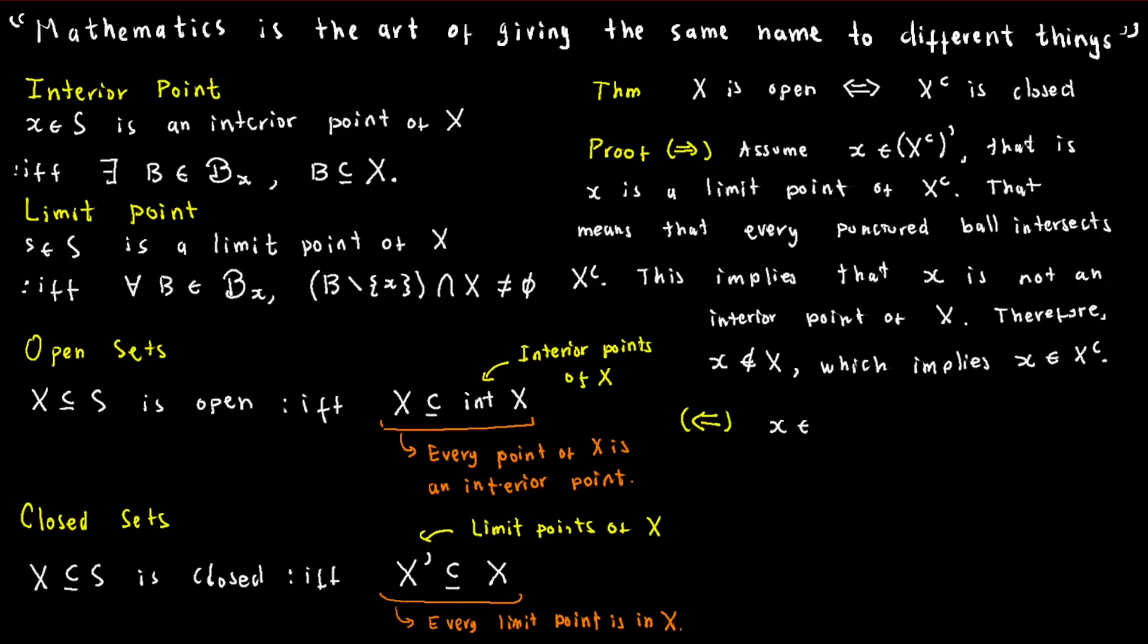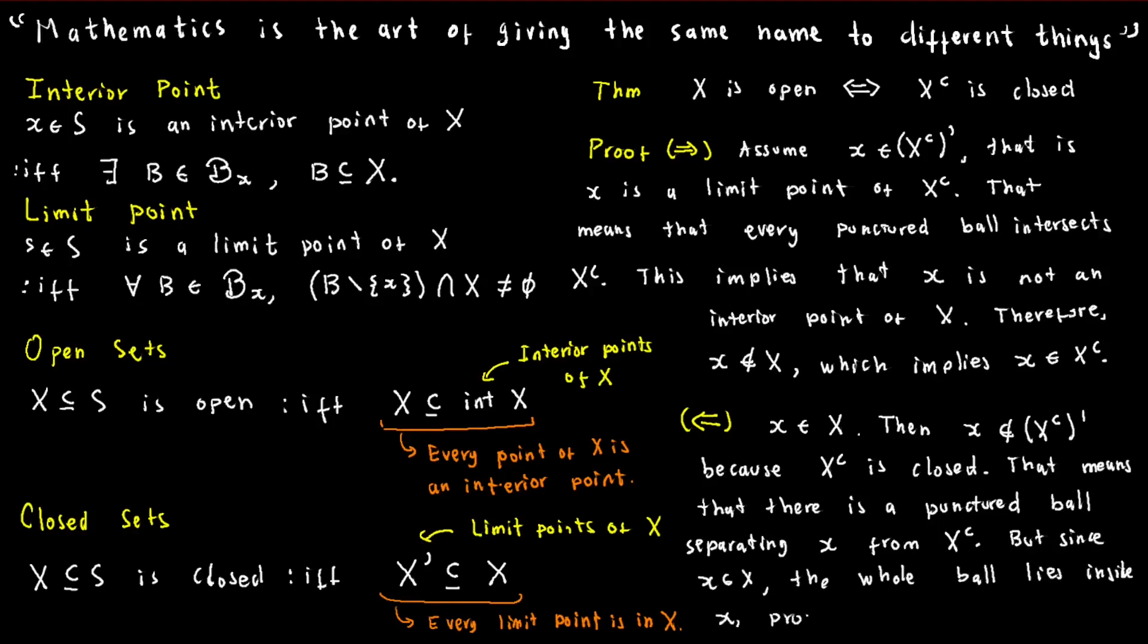For the other direction, assume that X's complement is closed and let x be a point of X. Since x is in X, x is not a limit point of X's complement. Therefore, there exists a puncture ball around x that does not intersect X's complement. This means that the ball is completely contained in X. Since x is not in X's complement, we conclude that the ball is completely contained in X and hence x is an interior point. This shows that X must be open.